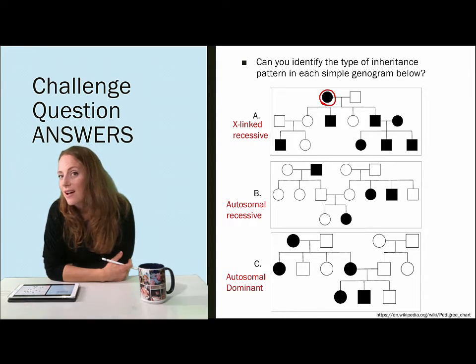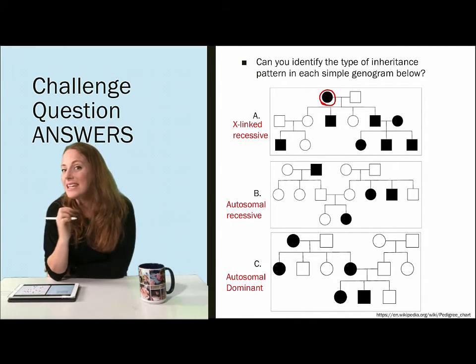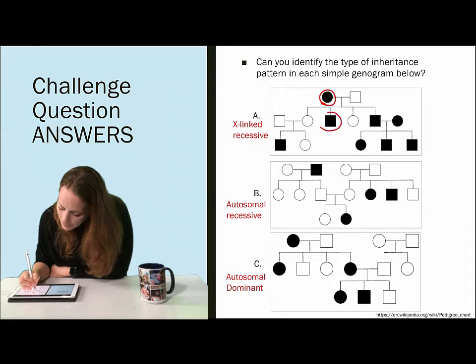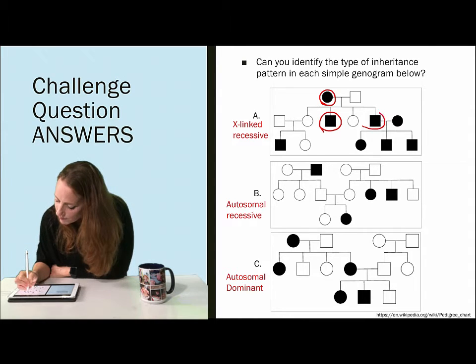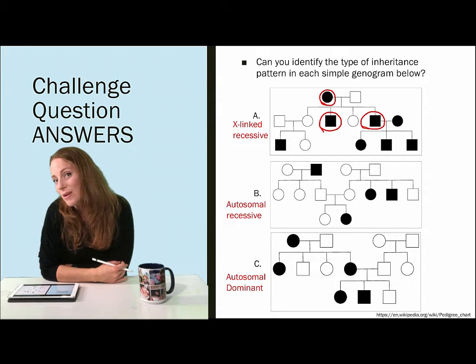Now let's look down at the first generation just from that female with an unaffected male. You'll see that in that first generation both of her male children were affected but none of her female children.